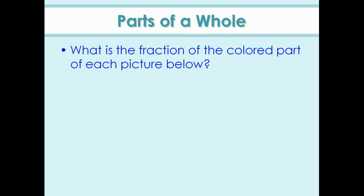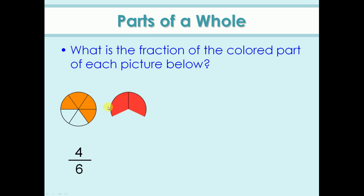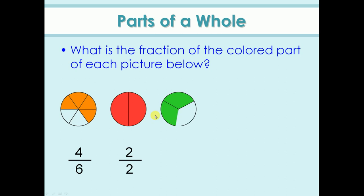What is the fraction of the colored part of each picture below? Here, total parts are six and colored parts are four, so the fraction is four by six. Next, there are two parts and both are colored, so the fraction is two by two. Here, total parts are three and colored parts are two, so the fraction is two by three.